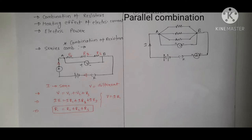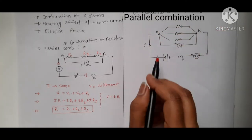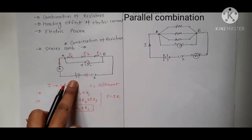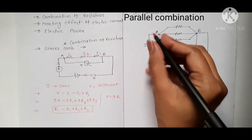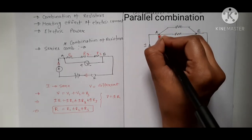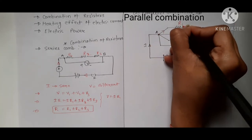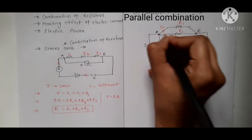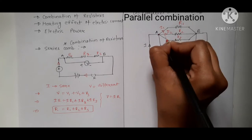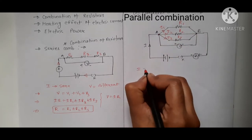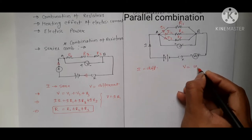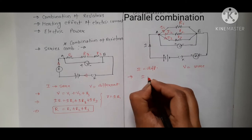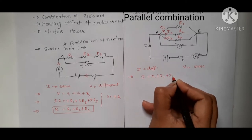Now let's look at the parallel combination. In parallel, resistors are connected differently. Unlike series where current is the same, in parallel the current divides at point A. The total current I splits into I1 through R1, I2 through R2, and I3 through R3. However, the voltage V is the same across all resistors, and the total current is I = I1 + I2 + I3.